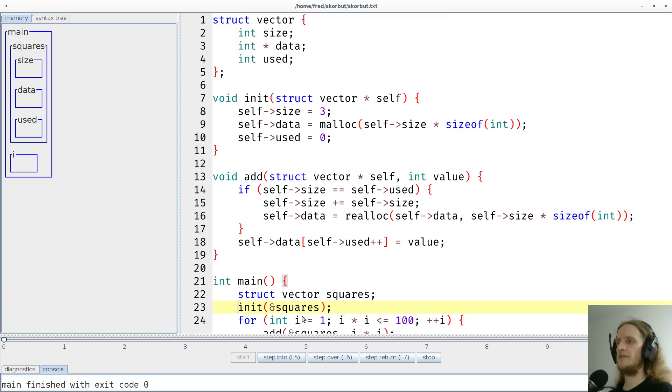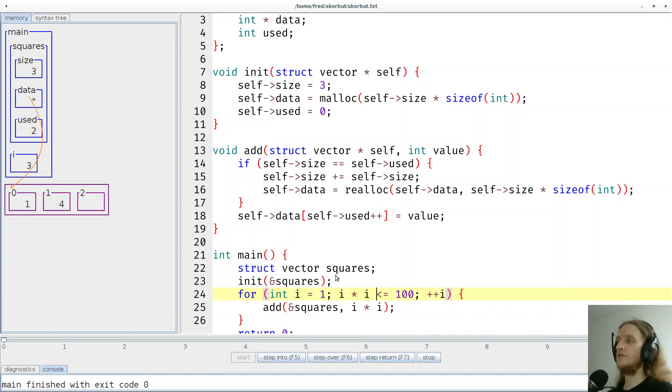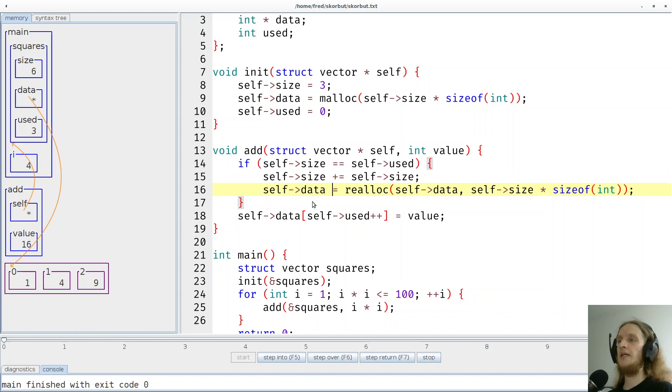So maybe let's first fill the array up. Let's store three squares inside. And then let's see what happens if we jump into the add function. So here we notice that 3 and 3 are equal. So we jump to the next line. Then we increase the size from 3 to 6 right here. And now we make the array bigger. If we do the realloc, we can see now we have space for 6 elements instead of 3.